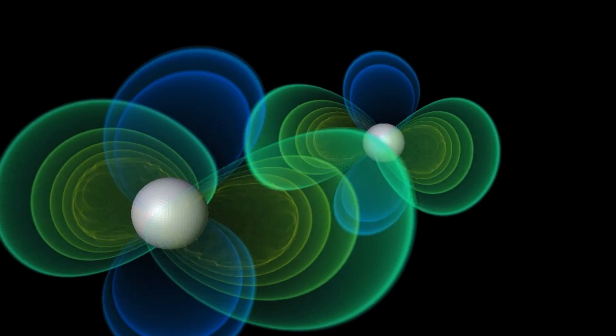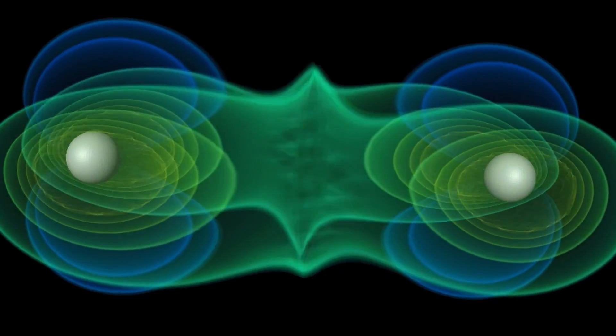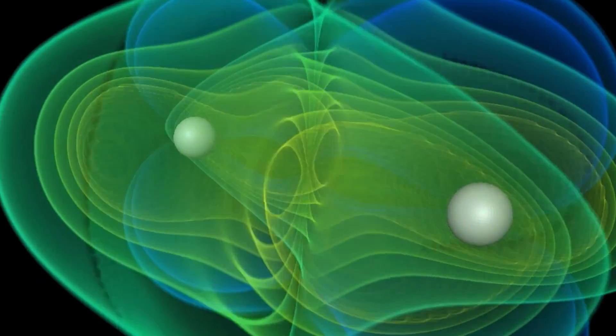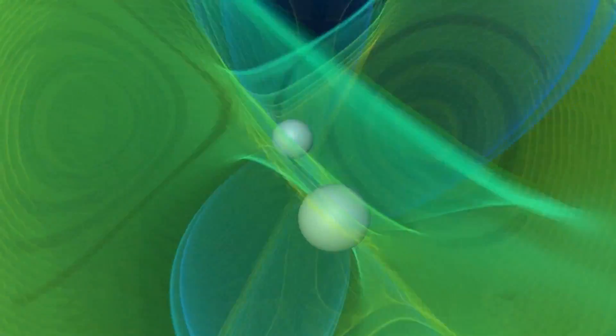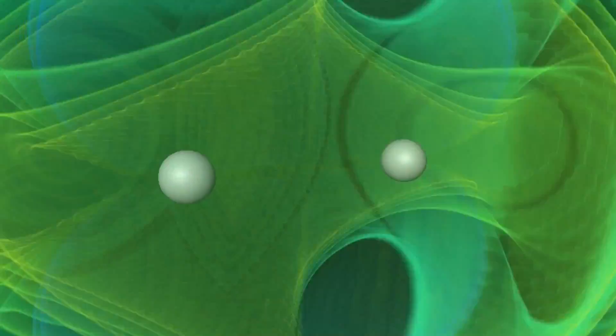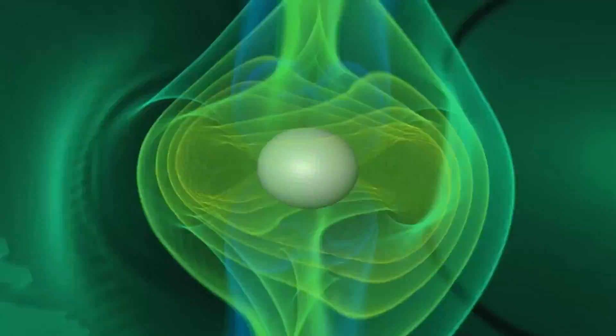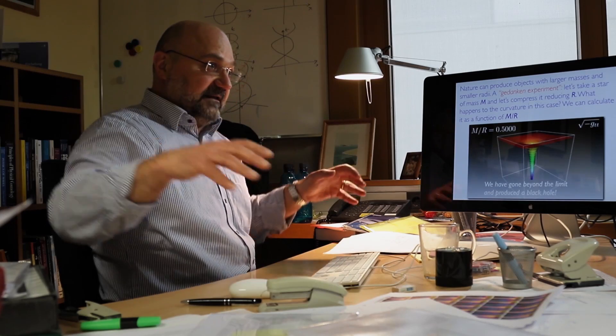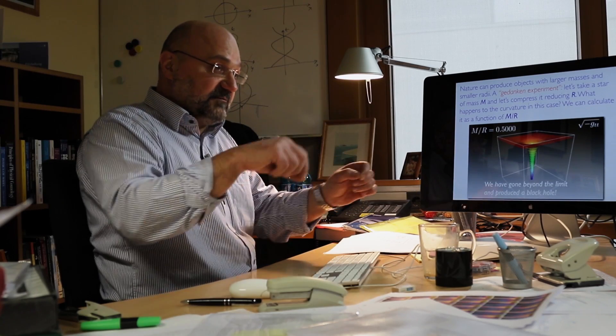They are attracting each other and at the same time they are trying to avoid each other. So they go around each other in this, what we call in spiral. They are losing energy. They are emitting these gravitational waves. These ripples that are produced, are produced by the motion of these two objects.